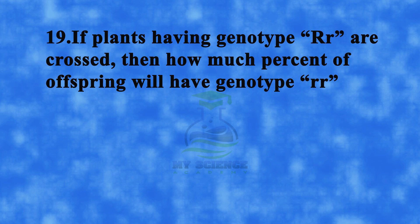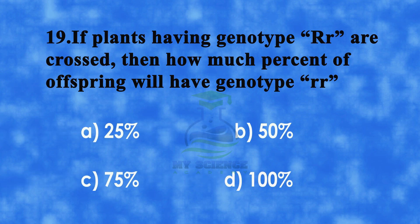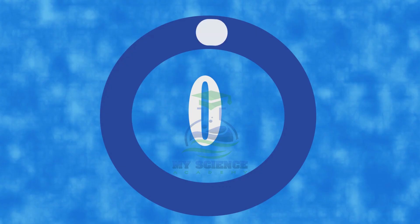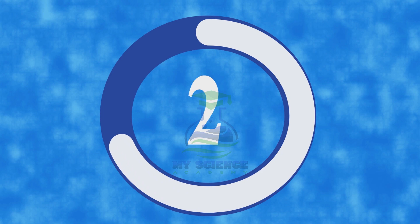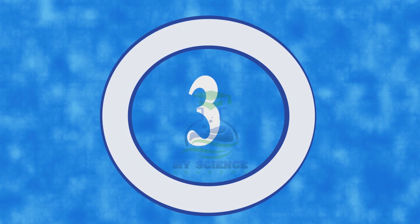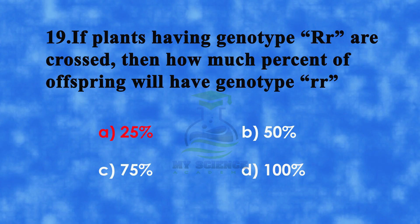Question 19: If plants having genotype Capital R, small r are crossed, then what percent of offspring will have genotype small r, small r? A. 25%, B. 50%, C. 75%, or D. 100%. Correct answer is A. 25%.